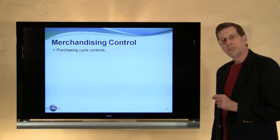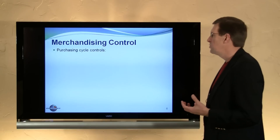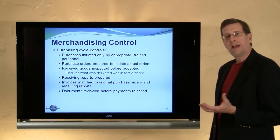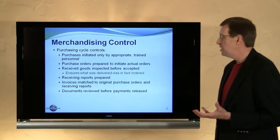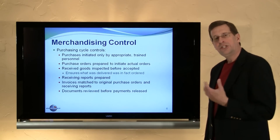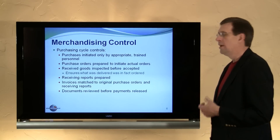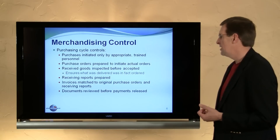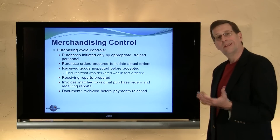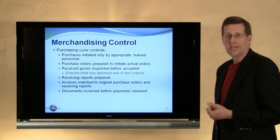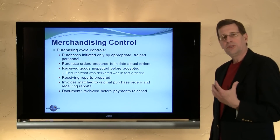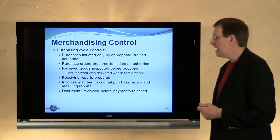Not only is it important to have controls at the front end of the business, it's also important to have controls within the purchasing cycle. Purchases can only be initiated by appropriately trained personnel with the authority to initiate a transaction. A purchasing department shops for the best price and terms, then initiates the order through a documented purchase order. When goods are received, someone should inspect them and prepare a receiving report documenting that the goods arrived in good order — checking those goods back to the purchase order to confirm what's accepted was actually ordered by the business.